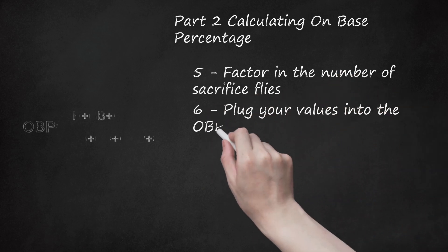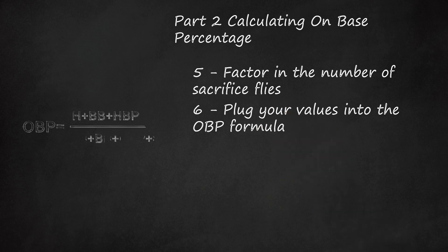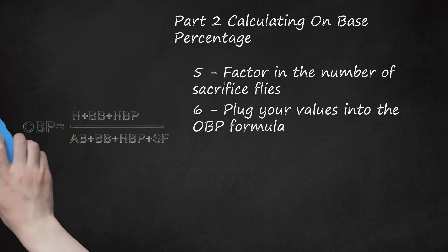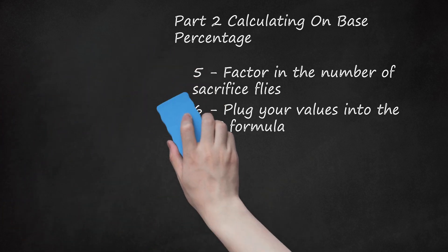Plug your values into the OBP formula. To find the on-base percentage, you add the player's hits, hits by pitch, and bases on balls together. You then divide that number by the sum of the at-bats, hits by pitch, bases on balls, and sacrifice flies. In the example above, you would plug Blackman's stats into the formula: add H plus BB plus HBP to get three, and AB plus BB plus HBP plus SF to get six. Then divide three by six. Blackman's OBP for this particular game was therefore 0.5.